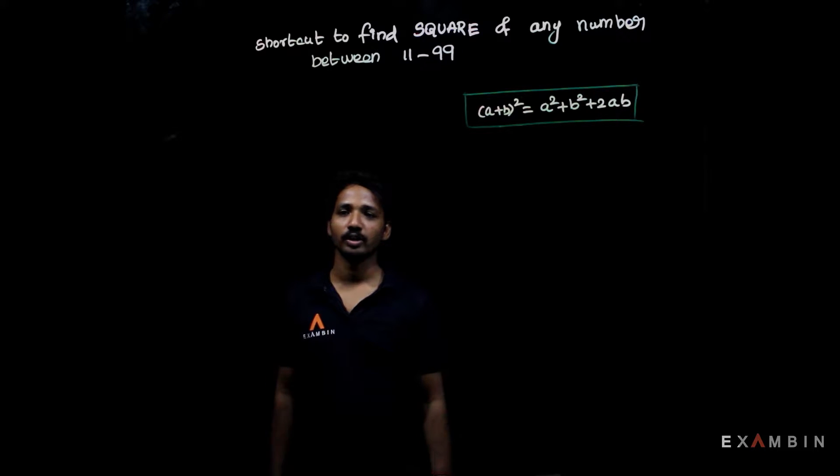In this method we are going to use the a² + b² + 2ab formula, but not in the same way. We are going to use it in a different way to calculate square value of any number between 11 to 99. Please remember that this trick will not work beyond 99.